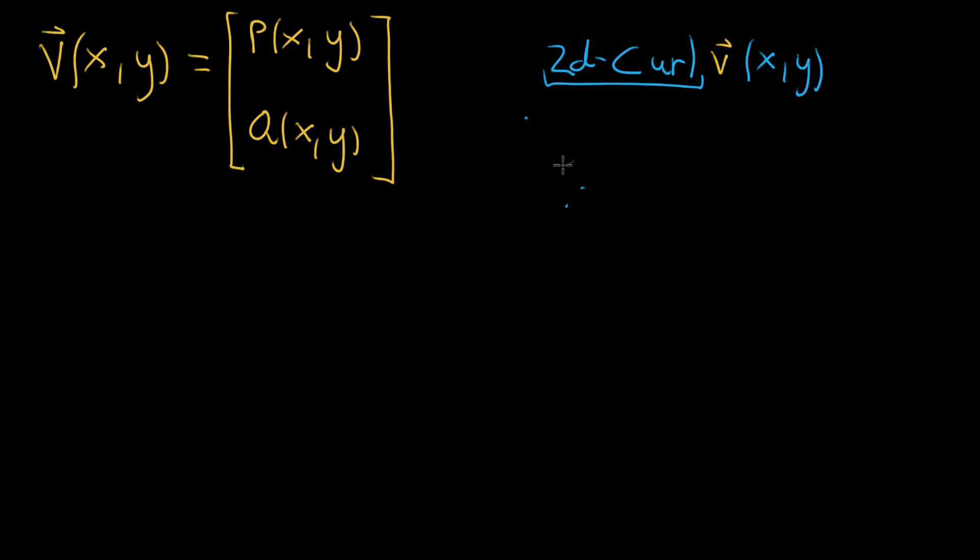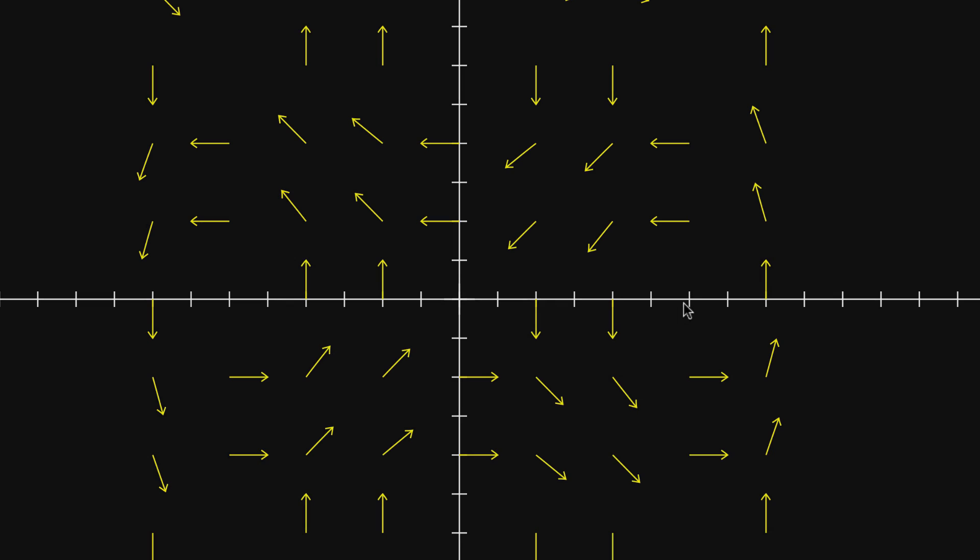And the reason it's scalar valued is because at every given point, you want it to give you a number. So if I look back at the vector field that I have here, we want that at a point like this, where there's a lot of counterclockwise rotation happening around it, for the curl function to return a positive number. But at a point like this, where there's clockwise rotation happening around it, we want the curl to return a negative number.